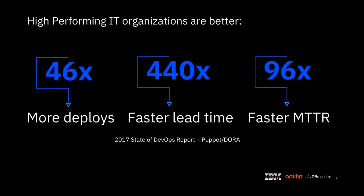Let's step back. Why does continuous delivery matter? The DevOps Research Association, DORA, has done the studies. High-performing IT organizations, which we know are correlated with successful companies in the market, do a lot more deployments. They have faster lead time from when new code shows up until it enters production. And when things go wrong, their mean time to recovery is like 100 times faster than an average or poor organization.